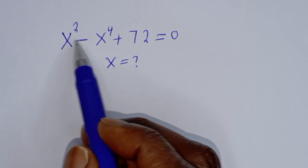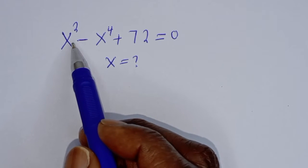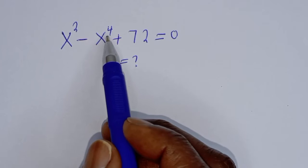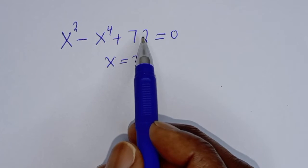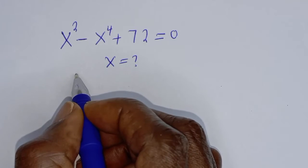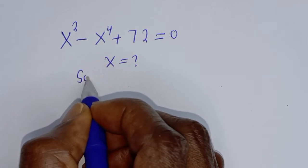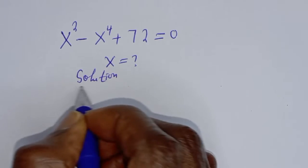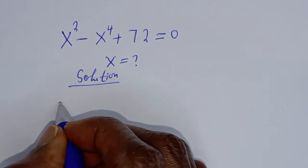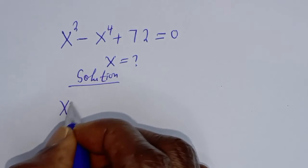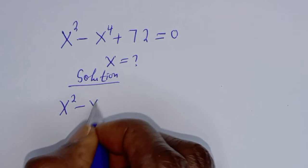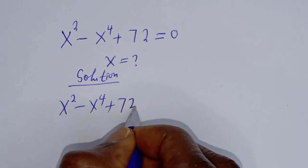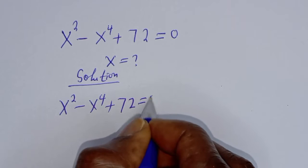Hello. How to solve for x from this given equation: x squared minus x raised to power 4 plus 72 is equal to 0. Solution. x squared minus x raised to power 4 plus 72 is equal to 0.